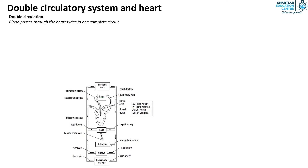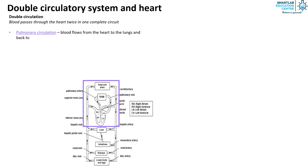This can be explained by the two circulatory pathways, which are the pulmonary circulation and systemic circulation. In the pulmonary circulation, blood flows from the heart to the lungs and back to the heart. Blood enters the lungs at low pressure, allowing for blood to be well oxygenated before it is returned to the heart.